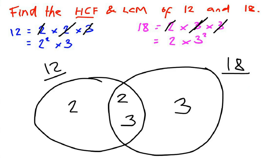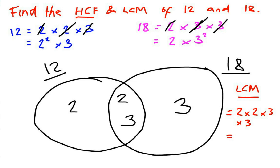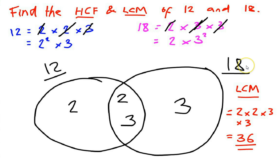To find the lowest common multiple we multiply together all the numbers in the entire Venn diagram: 2 times 2 times 3 times 3, which gives 36. So the lowest common multiple of 12 and 18 is 36. A useful check: a factor is always going to be smaller than the numbers, so if your HCF comes out bigger than both numbers you've gone wrong. And a multiple is always bigger, so you'd expect the LCM to be bigger than both numbers and the HCF to be smaller.